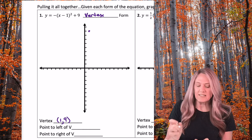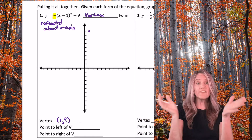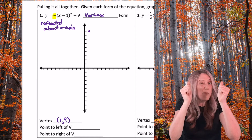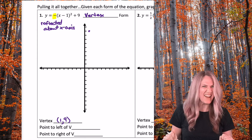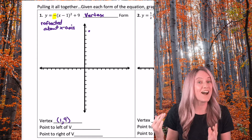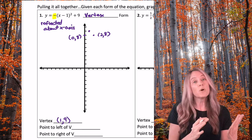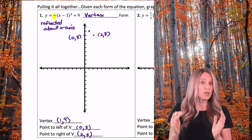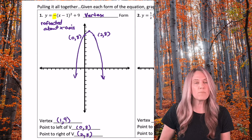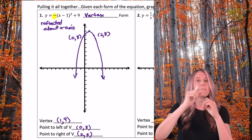I do need to pay attention to one thing: we have been reflected about the x-axis. That just means back to the vertex over 1, but instead of up 1 I go down 1; over 2 down 4; over 3 down 9. But do I even need that many points? Not for these quick graphs. So from the vertex over 1 down 1: the point to the left is (0, 8) and the point to the right is (2, 8). Sketch the parabola with a curve, not straight segments — this is a quick sketch showing we understand the math.